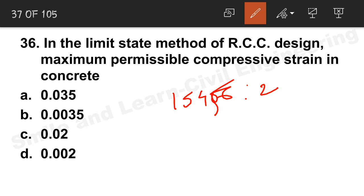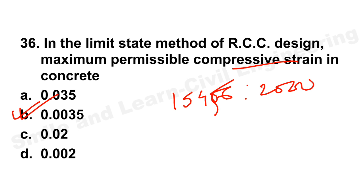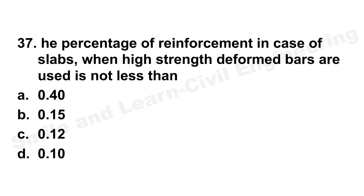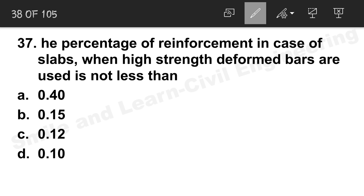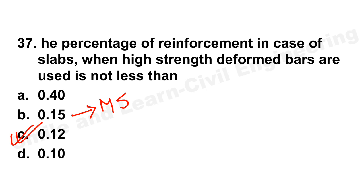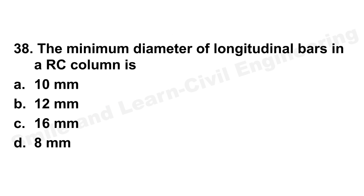Question 36: Limit state method of RCC design — maximum permissible compressive strain in concrete. As written clearly in IS 456:2000, the maximum permissible compressive strain equals 0.0035. Question 37: Percentage of reinforcement in slabs — when high-strength deformed bars are used it is 0.12%, and for mild steel bars it is 0.15%.